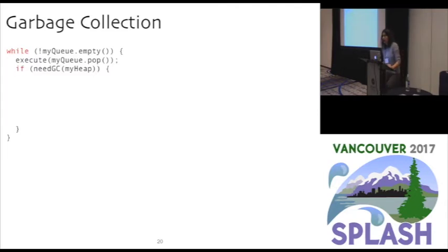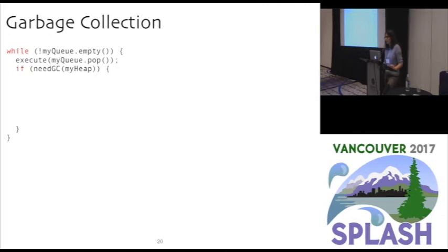When does garbage collection happen? During its execution, an actor takes messages from its queue and executes the corresponding behaviors. In between executing behaviors, it will look at the state of its heap and decide whether it needs to do garbage collection. Note that doing garbage collection between behaviors is just a design decision — we want to avoid using the stack as roots, but adding the stack as roots and doing garbage collection in the middle of behaviors would be completely possible and would not change anything in the algorithm.